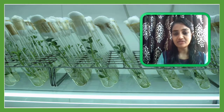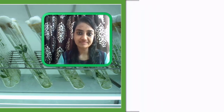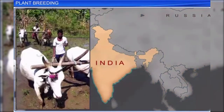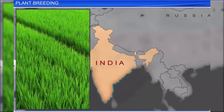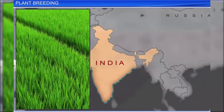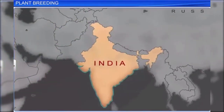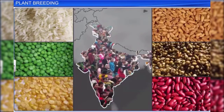Before finishing the lecture, an animation video is shown to summarize the topic. India is an agricultural country with 62 percent of people engaged in agriculture for their livelihood. With the passage of time and an increase in population, the demand for food has risen extensively.